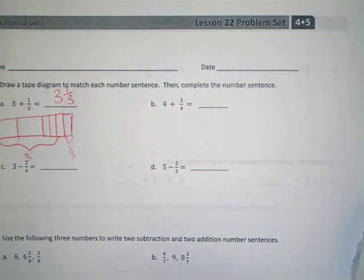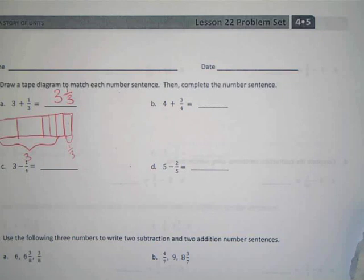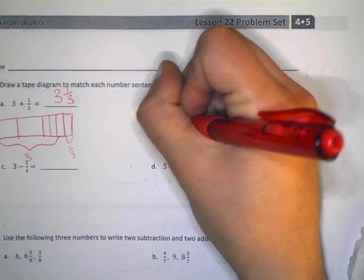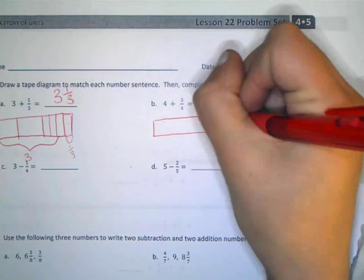All right, B, four plus three-fourths. How can I show that one? With a tape diagram, because that's what my direction said. Jacob? You draw a tape diagram, and then you split it into fours, and then you show that it's four.